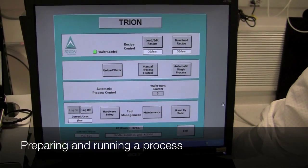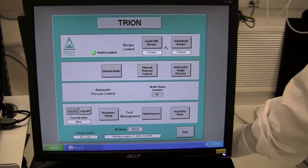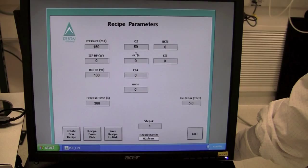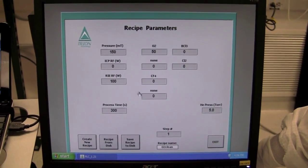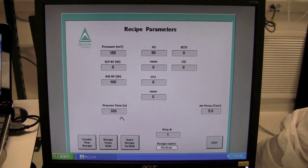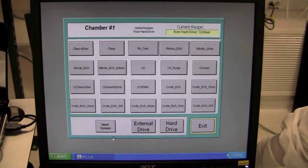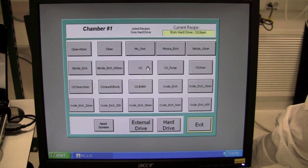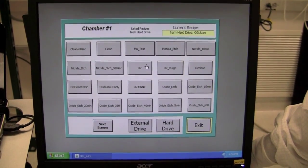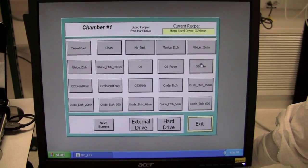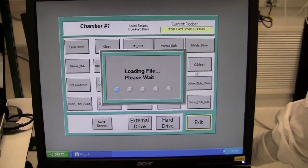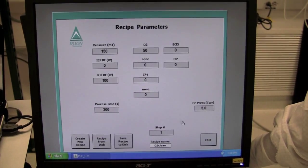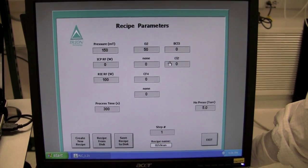To begin running the process, first you want to load a recipe. Under the top recipe control, you see a load edit recipe button. Click that and you see recipe parameters. Now, this happens to be O2Clean we just want to run but if you want to run a different recipe, what you do is click on recipe from disk and now you have a big series of recipes to pick from. Generally speaking, we only have about two or three most commonly recipes and the other ones are just variations on the process time. So, as before, we're just going to pick O2Clean, it will load the sample, hit exit, and now our parameters are loaded. They're going to be identical because it's the same recipe.